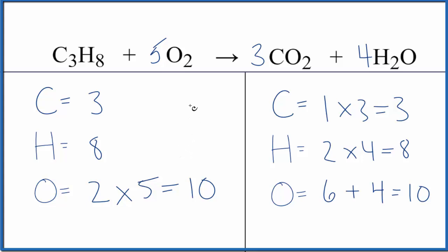If you wanted to write the states, that would look like this. Propane under normal conditions, that's a gas. We have oxygen gas, carbon dioxide gas, and water. Because this is combustion, it's a combustion reaction, it's going to be exothermic. It's going to be hot. Water would be a gas, at least initially.